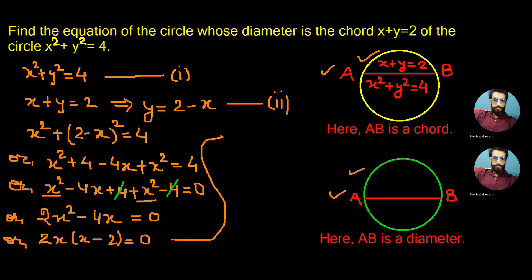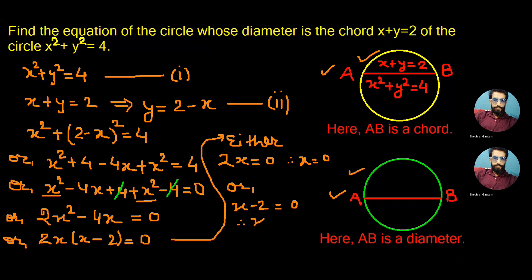Solving this equation we get two values for x. Either 2x = 0, for which we get x = 0, or x − 2 = 0, for which we get the value x = 2.